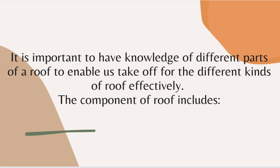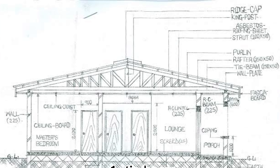The components of a roof include: 1) tie beam, 2) ridge cap, 3) purlins, 4) rafters, 5) king post, 6) strut, 7) fascia or barge board, 8) ceiling joist, 9) ridge board, 10) wall plate, 11) hip board, etc.